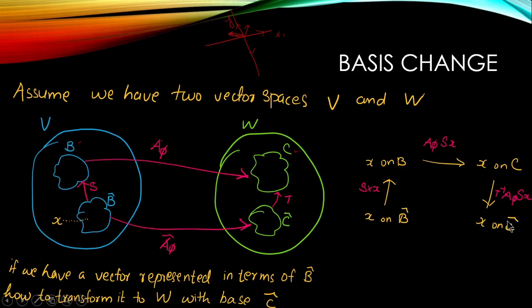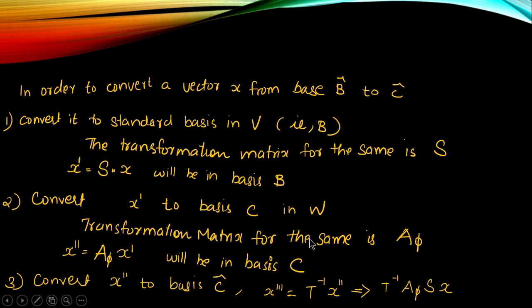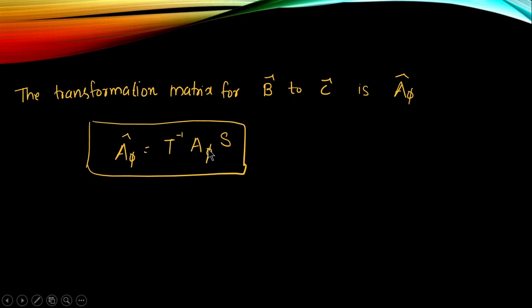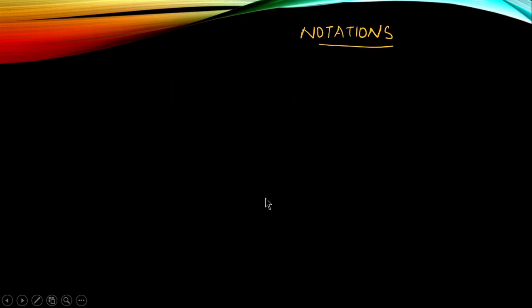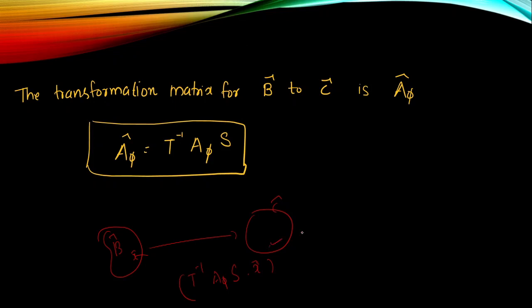So finally we get the vector in basis Ĉ as T⁻¹·φ·S·x. Therefore φ̂ can be defined as T⁻¹·φ·S. That means if you have any vector x in B̂ and want to transform it into Ĉ, you multiply it by T⁻¹·φ·S to get the corresponding vector in Ĉ basis.